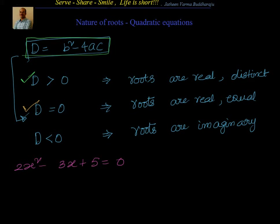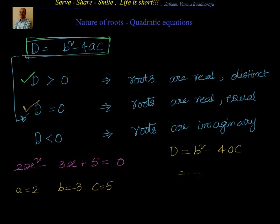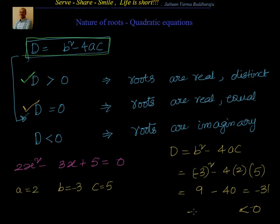One more example: 2x² − 3x + 5 = 0. Here a = 2, b = −3, c = 5. Discriminant: D = (−3)² − 4 × 2 × 5 = 9 − 40 = −31. Since D = −31 < 0, the roots are imaginary. So this equation has imaginary roots.